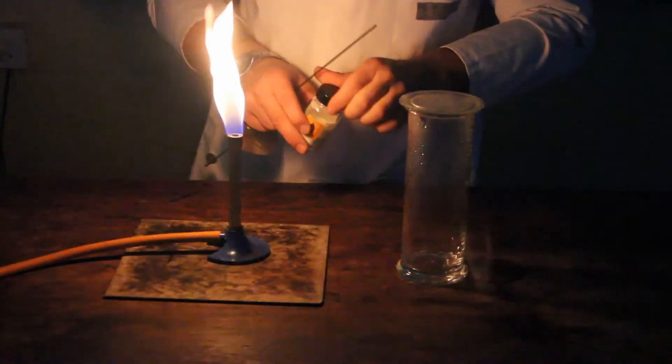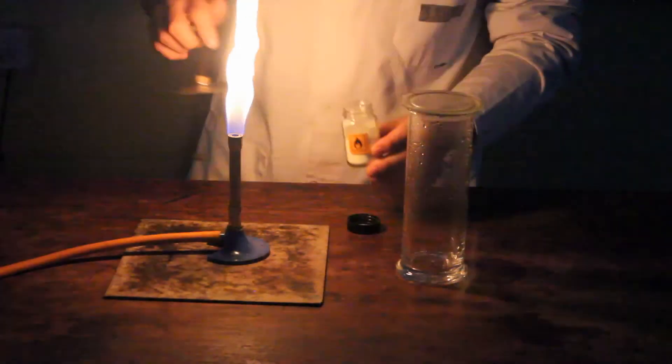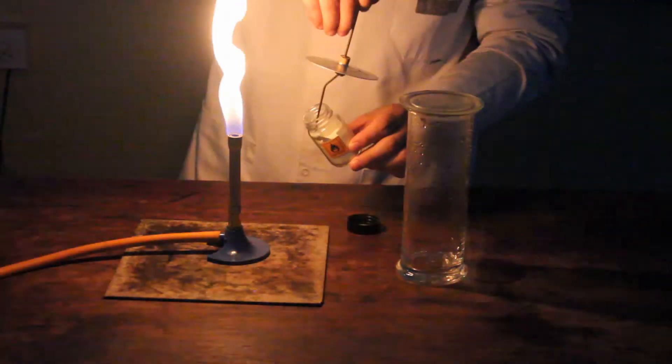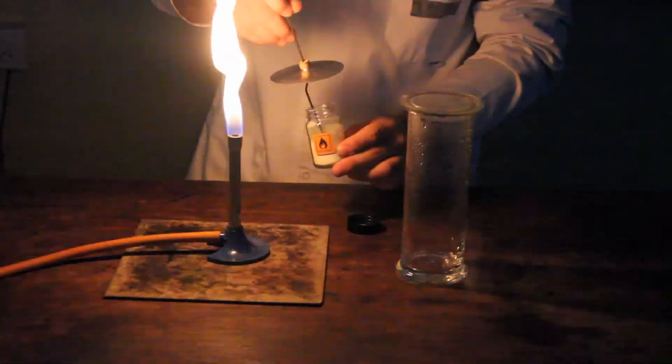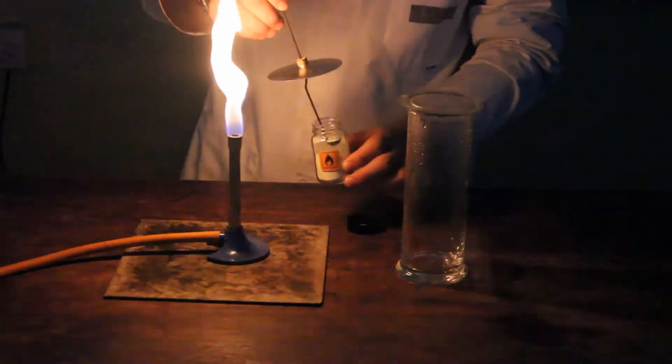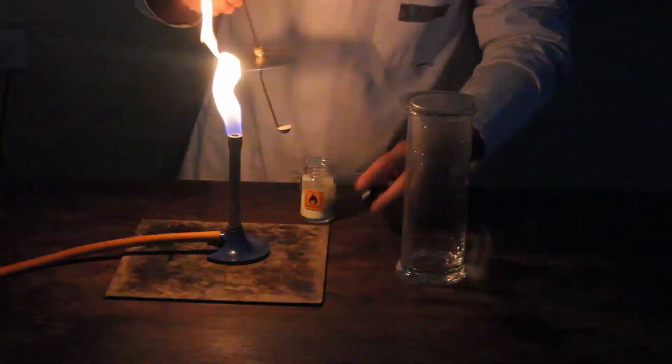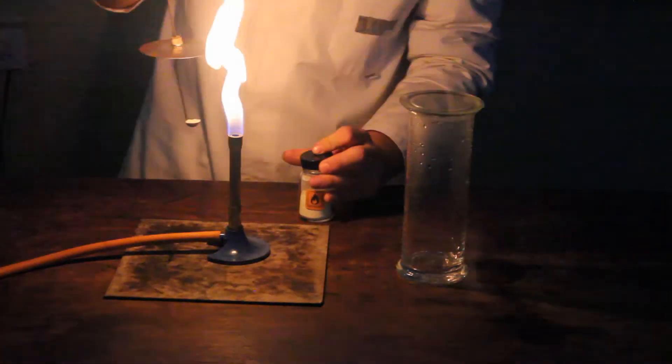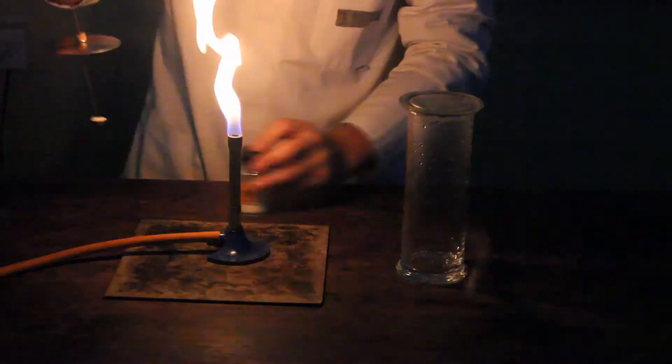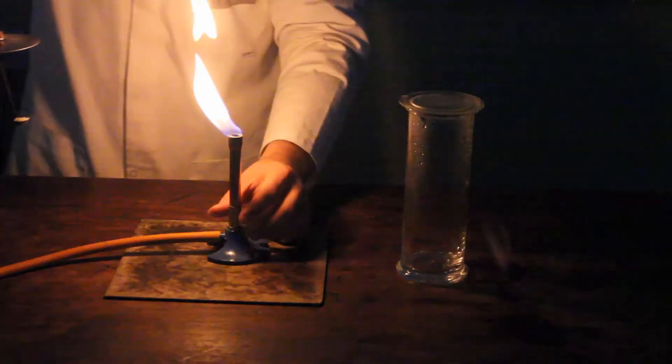Inside we've got sulfur. We're going to put this onto a spoon which we will then drop into the gas jar once it's ignited. Now because the gas jar has got pure oxygen, this reaction is going to be an example of complete combustion and we'll get lots of sulfur dioxide produced.